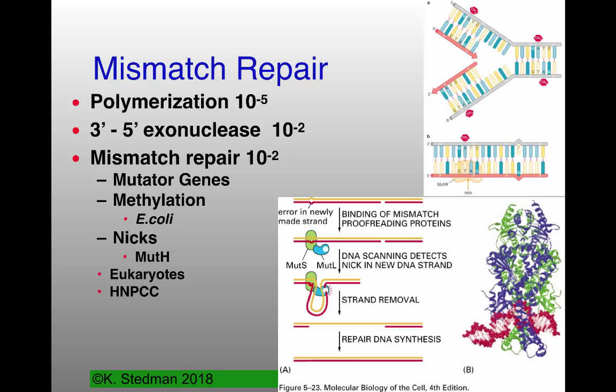Once you have this kind of change, it needs to be repaired. We've talked about the three main mechanisms: mismatch repair, nucleotide excision repair, and base excision repair, and then double-stranded break repair, which we'll talk about a little later.